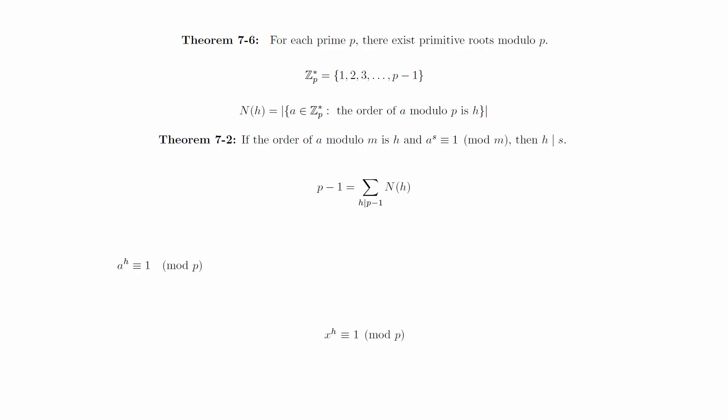Now consider the equation x to the h is congruent to 1 mod p. We know this equation has at most h mutually incongruent solutions, but we also know that a, a squared, up to a to the h are all solutions that are mutually incongruent, and so we know that there are exactly h solutions.